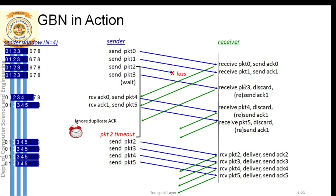Since packet 3 is out of order, the receiver cannot deliver it to the application layer. He must discard it. For example, if the message 'hi hello how are you' arrived as 'hi are you,' the receiver would only accept 'hi' because that arrived in order, and discard 'are you' as meaningless. Similarly, packet 3 is discarded, and the receiver does not send an acknowledgement for it.